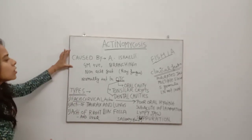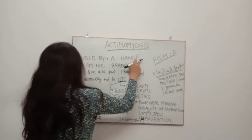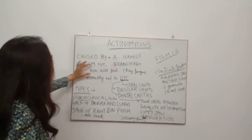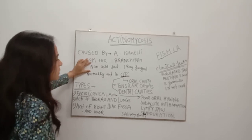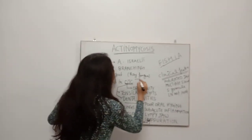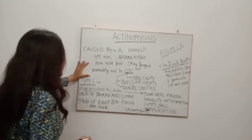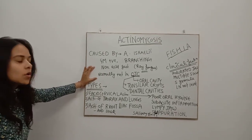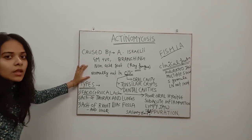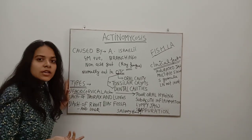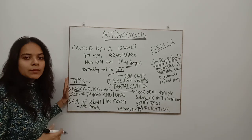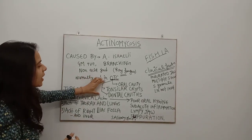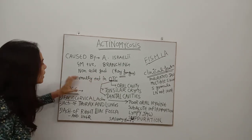Actinomycosis is generally caused by this organism. It is a gram-positive branching organism. It is non-acid fast, and it is also known as the 'grave fungus.' It is normally present in our oral cavity, tonsillar crypts, or dental cavities. When there is an inflammatory condition, or if the patient is not maintaining their oral hygiene, then it becomes pathogenic.